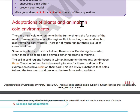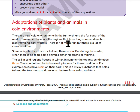Adaptations of plants and animals in cold environments. There are very cold environments in the far north and the far south of the world. These are the regions that have long summer days, but also very long, dark winters. There is not much rain, but there is a lot of snow in winter. Some animals have thick fur to keep them warm, but during the winter when there is no food, some animals either hibernate or migrate.